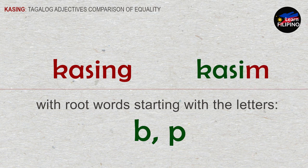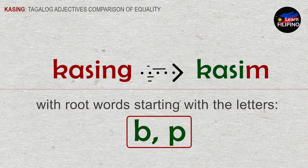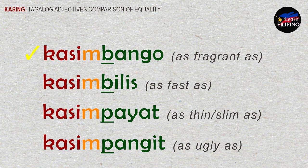Another variant of 'kasing' is 'kasim'. Kasim is used for root words starting with the letters B and P. For example: 'kasimbango' — as fragrant as; 'kasimbilis' — as fast as; 'kasimpayat' — as thin or as slim as; 'kasimpangit' — as ugly as.